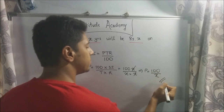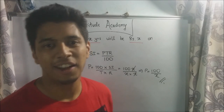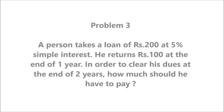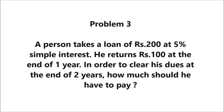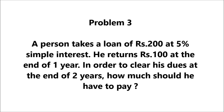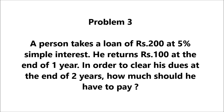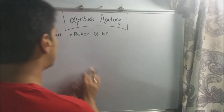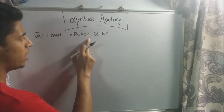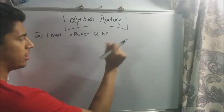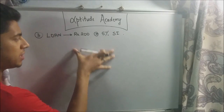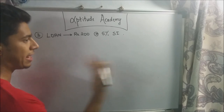Problem 3: A person takes a loan of rupees 200 at 5 percent simple interest. He returns 100 rupees at the end of one year. In order to clear his dues at the end of two years, how much should he pay? So the man takes a loan of rupees 200 at 5 percent simple interest, and after the first year he pays rupees 100 back to the bank.